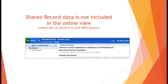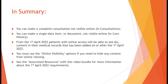Regarding the shared record, other health service information viewable through the shared record on EMIS will not be accessible unless you have chosen to file that data directly into your GP record. In summary, you can opt to make a complete consultation not visible online, or you can opt to make a single entry not visible online in Care History. From the 1st of April 2022, everything added to a patient's record from that point onwards will automatically be visible online, so you'll need to use the online visibility options if you want items not to be visible.